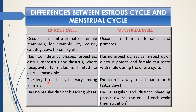The estrus cycle length varies among species. But the duration of the menstrual cycle is a fixed time — about a month, termed the lunar month, approximately 28 plus or minus 2 days. In the estrus cycle there is no regular bleeding phase, but in the menstrual cycle there is a regular and distinct bleeding phase towards the end of each cycle, called menstruation, from which the terminology 'menstrual cycle' emerges.